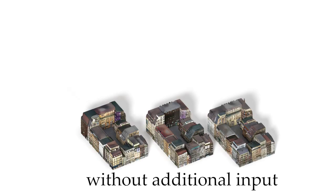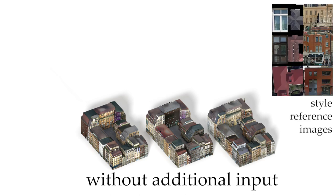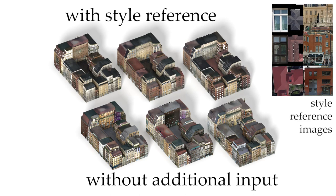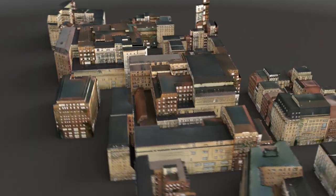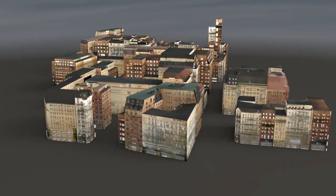This detail can be generated fully automatically without user input, or with style provided by the user in the form of style reference images. Our method is based on a set of generative adversarial networks that learn a distribution of details from a large real-world data set. This means that a very large scene can be detailed realistically without ever placing the same detail twice.